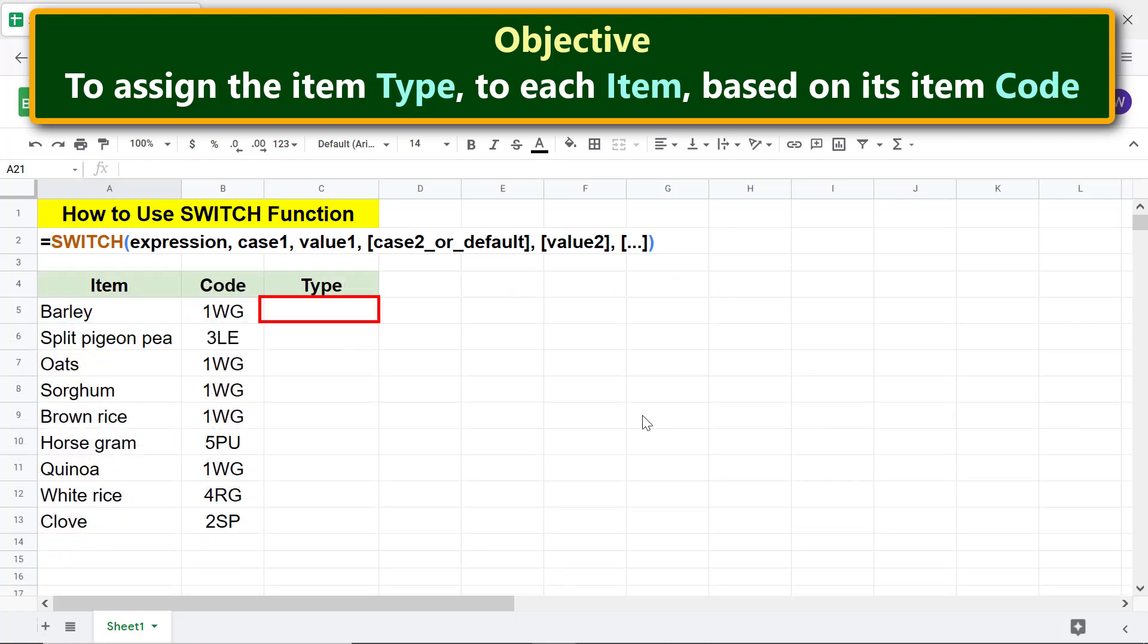First type equal to S W, select SWITCH. For expression, select this range.